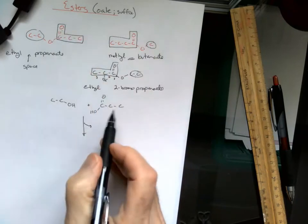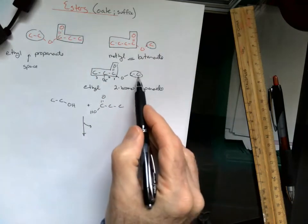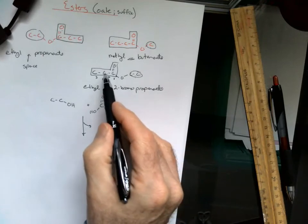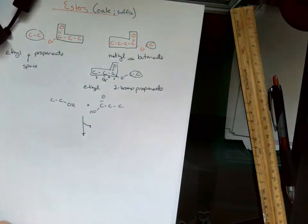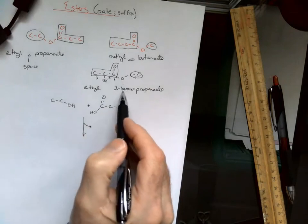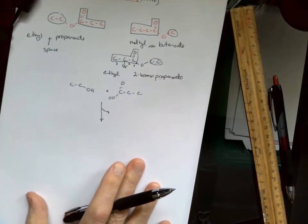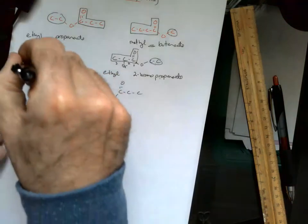always goes out front. I will never put groups on here, I will only put them on that main chain. So whatever group is on that main chain, you just attach it to the propanoate. Now this is a